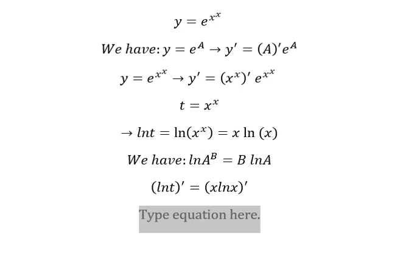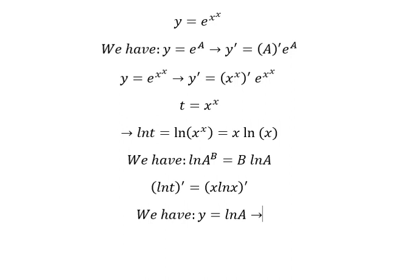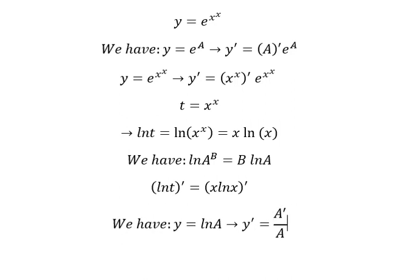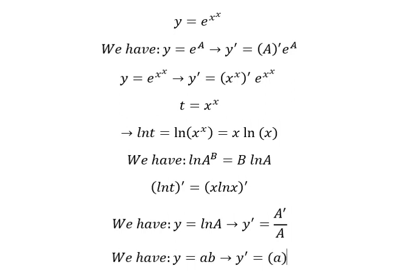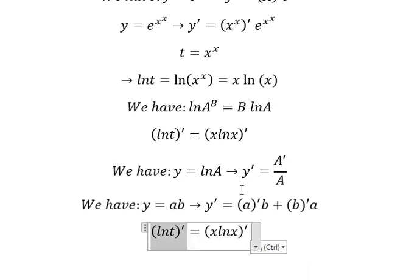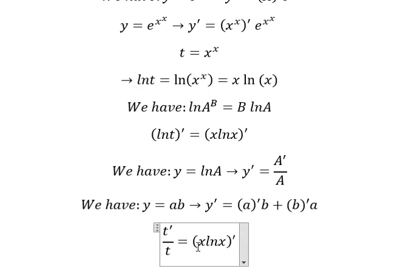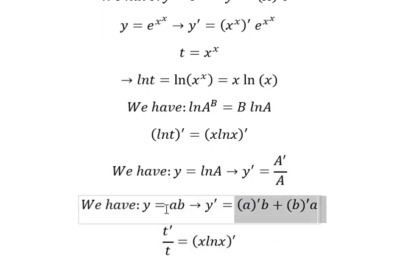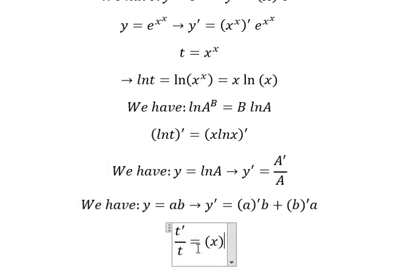Now we have the formula in here. And the second one — so this one is about this one, this one is about this one. So a is about s, b is about ln(s). So we have like this.